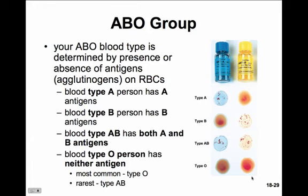Blood typing can be fairly difficult to understand. I invite you to spend a little time here — close your book and notes and write down these four blood types, identify what labels are on the surface of each, what antigens would exist in the serum, and what antibodies the blood would react to. We'll also do a blood typing exercise in the lab.